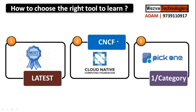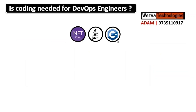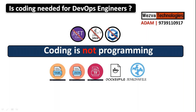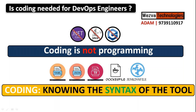The next big question is: I want to switch my profile — is coding needed for DevOps engineers? The first thing you need to understand is coding is not programming. Coding is needed for everyone but not programming. To be a DevOps engineer, you do not need to know programming like Java, .NET, or C++, but you do need to know coding.